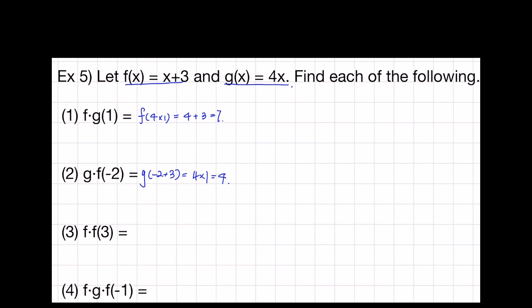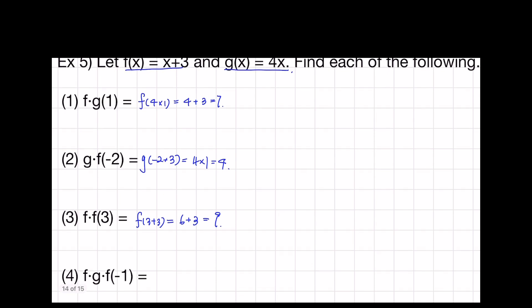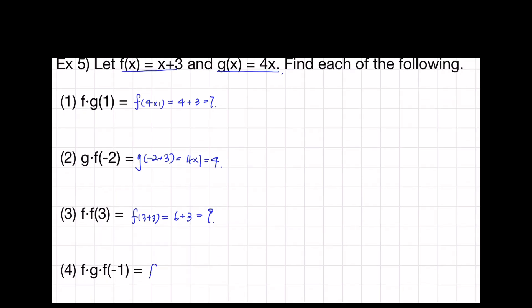Now let's see the third one. It's a composition of the same function. So f of f of 3, which is equal to f of 3 plus 3, is equal to f of 6, which is 6 plus 3, equal to 9. Let's see number four — this is a composition of three functions. So f of g of f of negative 1: f of negative 1 equals negative 1 plus 3, which is 2. Then g of 2 is 4 times 2, which is 8. Then f of 8 is 8 plus 3, so the answer is 11.